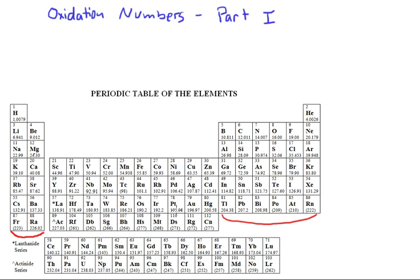We need to recall the charges that these different elements will have as they form compounds. Hydrogen and the alkali metals have an oxidation number of plus 1. The alkaline earth metals have a charge of plus 2. The boron family, a charge of plus 3.